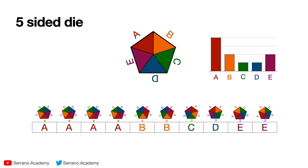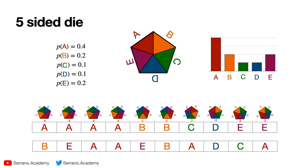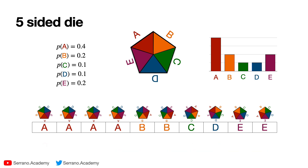Now this doesn't look like a fair die — it looks like a biased one. From here we can guess that maybe the probabilities are 40% for A, 20% for B, 10% for C, 10% for D, and then 20% for E. Let's say that these are the actual probabilities — that we toss the die thousands of times and realize it's biased in this way. If we toss it many times we're going to get 40% landing on A, 20% on B and E, and 10% on C and D.